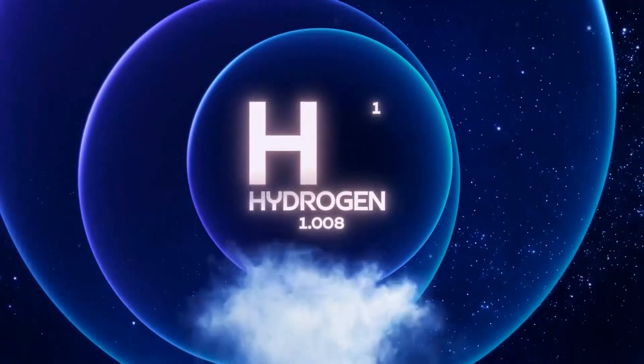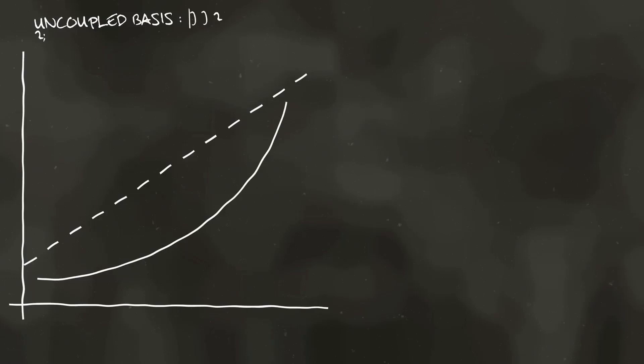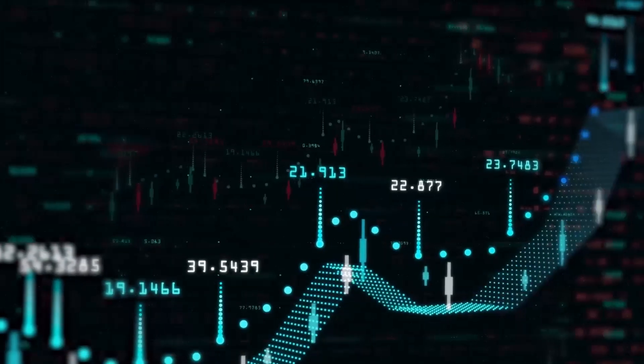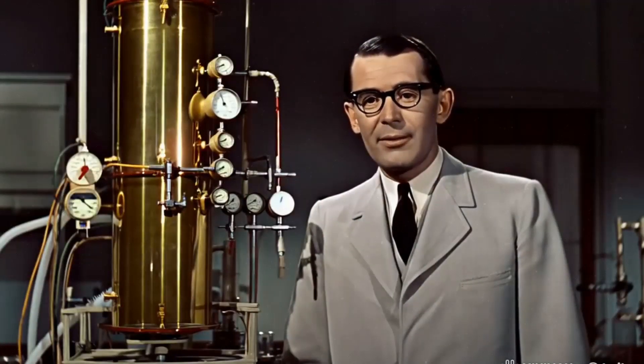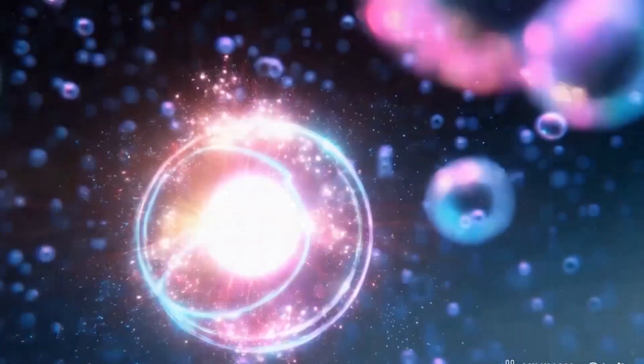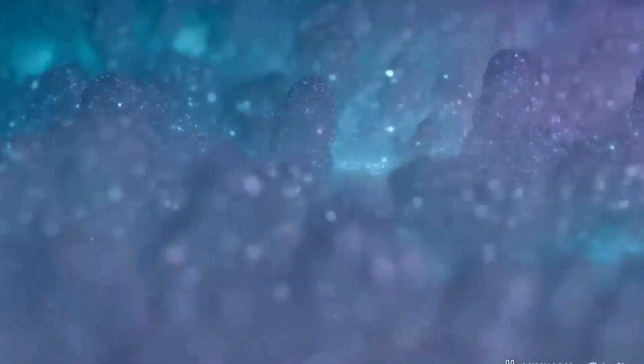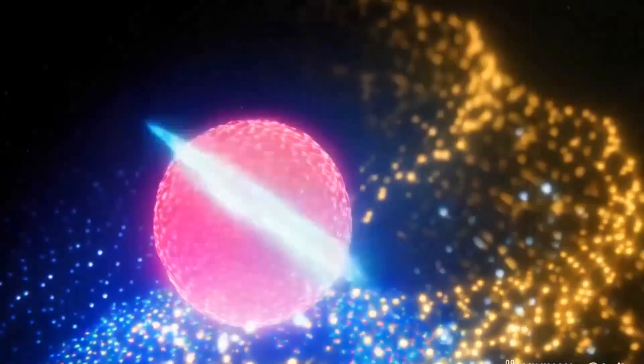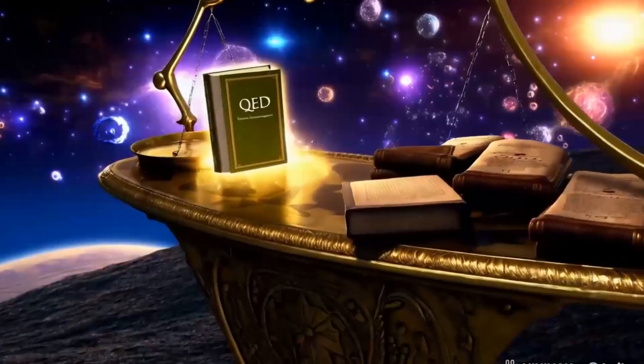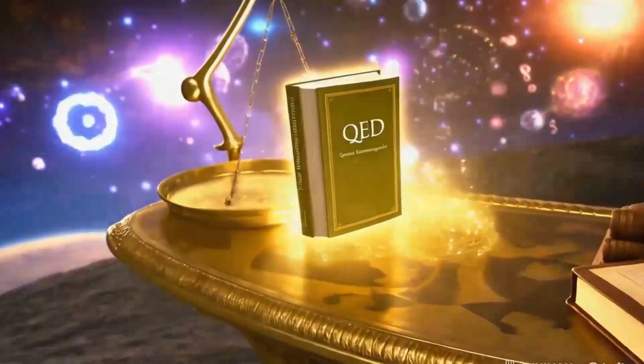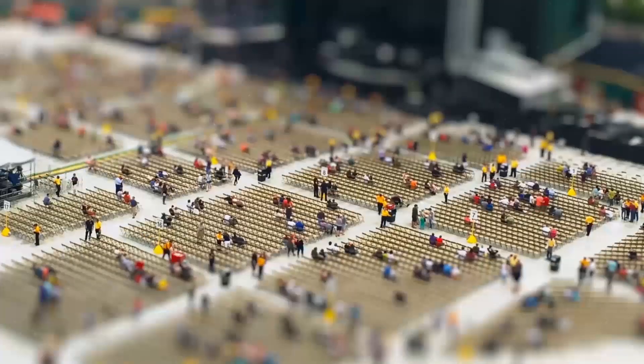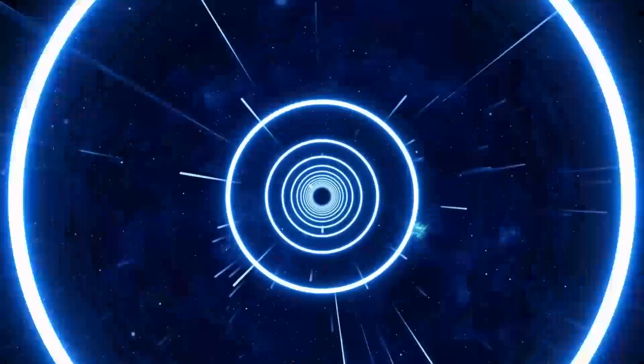Now, on to the Lamb Shift. Imagine you're looking at the energy levels of a hydrogen atom. Classical quantum mechanics gives you one picture, but zoom in closer and you'll see something odd, a tiny shift in those energy levels. This is the Lamb Shift, named after Willis Lamb, who first measured it in 1947. It's caused by the electron in the hydrogen atom interacting with the quantum foam of virtual particles that pop in and out of existence in the vacuum. The Lamb Shift was a crucial piece of evidence that led to the development of quantum electrodynamics, one of the most precisely tested theories in all of science. You could say, it's the ultimate shift in our understanding. But here's where it gets really interesting. Both superfluid helium and the Lamb Shift are intimately connected to zero-point energy. They're like nature's way of showing us that the vacuum isn't empty after all.